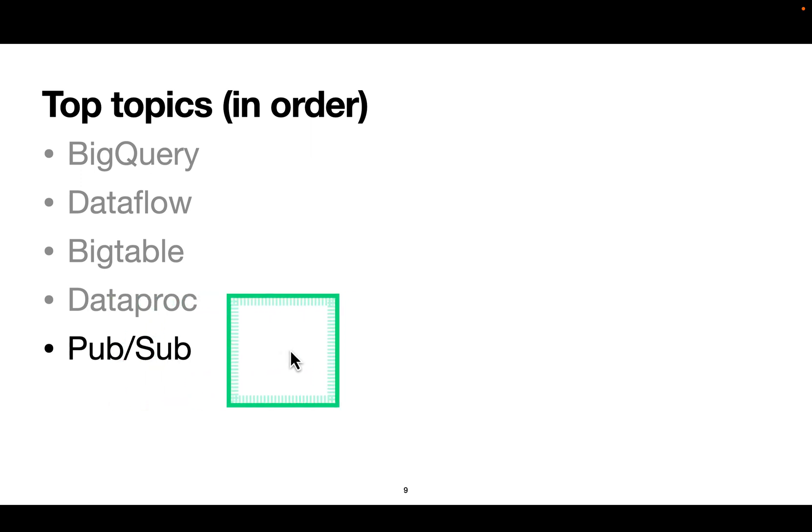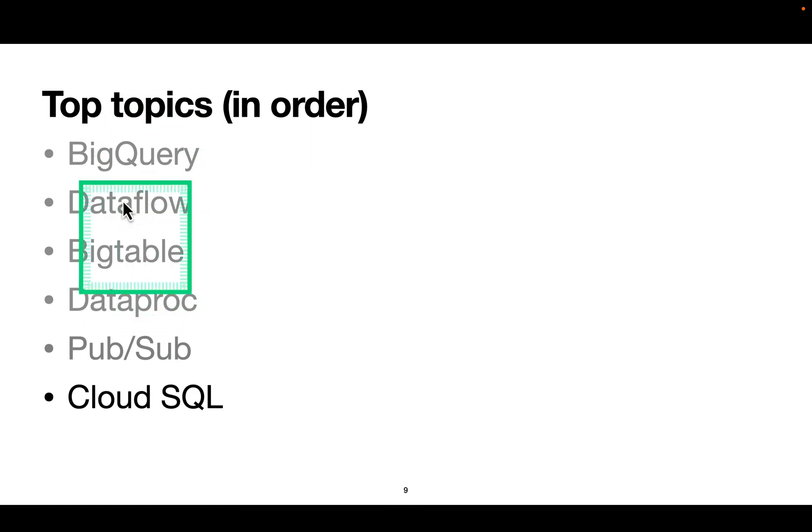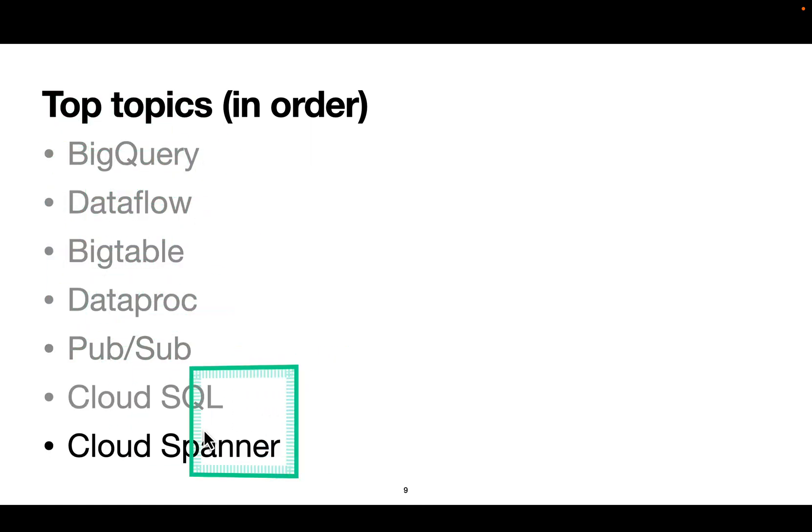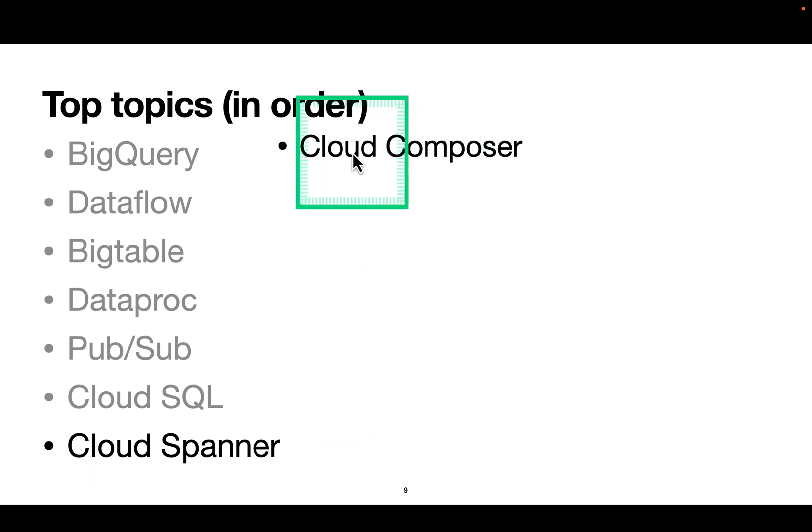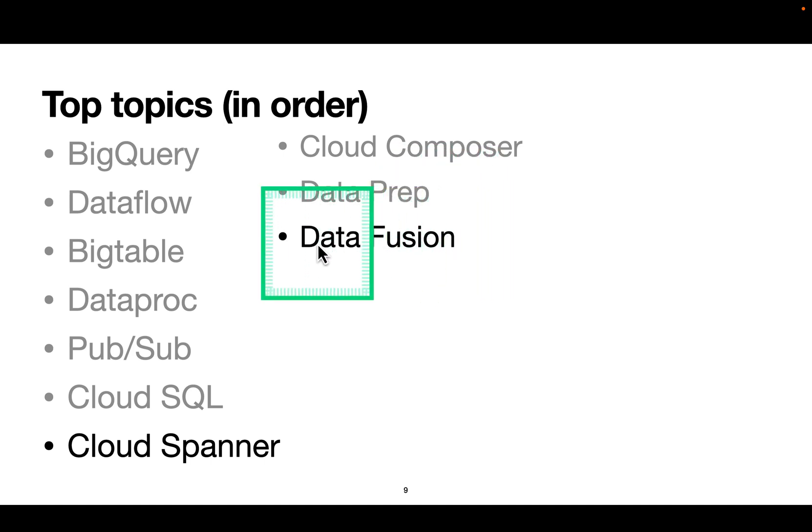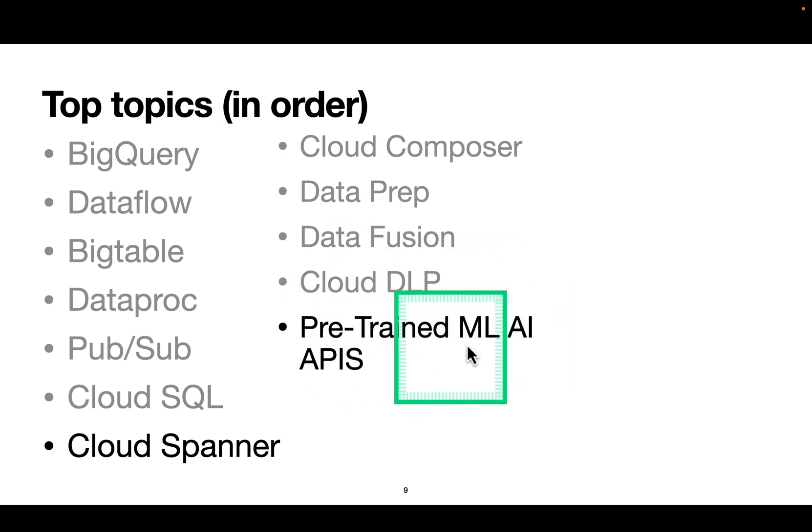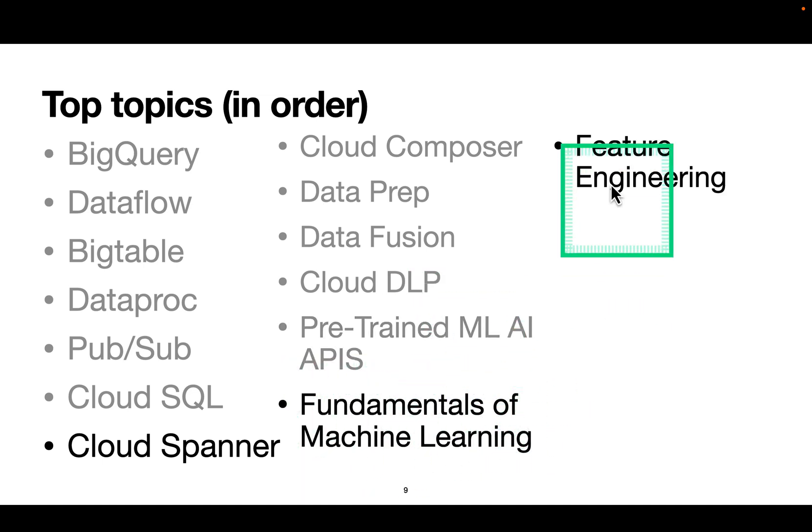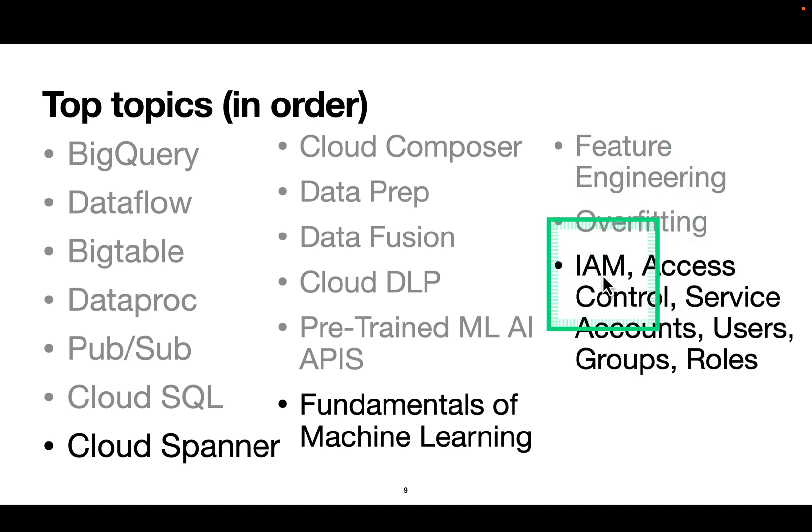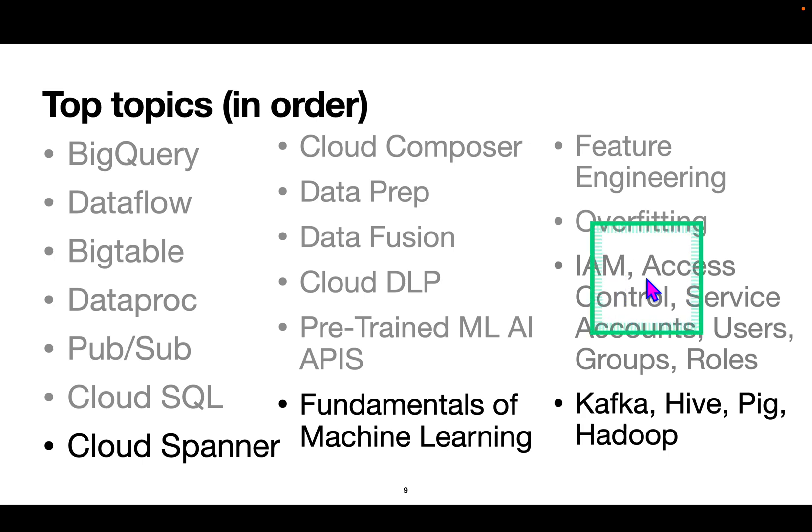Next is Cloud SQL, Cloud Spanner, Cloud Composer which is for orchestration, basically Apache Airflow, and Dataprep for preparation through point-and-click solution. Data Fusion for pipelining data processing. Dataflow and Data Fusion can do similar things, but Data Fusion is totally point-and-click. Cloud DLP, Data Loss Prevention APIs, pre-trained machine learning APIs, artificial intelligence APIs. You should know fundamentals of machine learning, feature engineering, what is overfitting. Last, Identity Access Management, access control, service accounts, users, groups, roles. Go through all the services. Just know a little bit about Kafka, Hive, Pig, Hadoop, just to know what these products do.